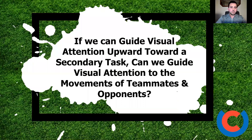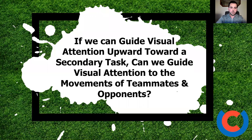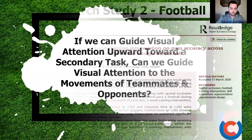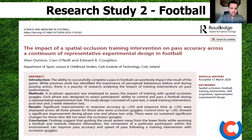So if we can guide visual attention upwards towards a secondary task — such as the visual call task we used in that study — we wanted to know if we could guide visual attention to the movements of teammates and opponents in a more applied setting. That question led us to our second study in football — the third study in my PhD — which assessed the impact of spatial occlusion training on pass accuracy across a continuum of representative experimental designs of football.